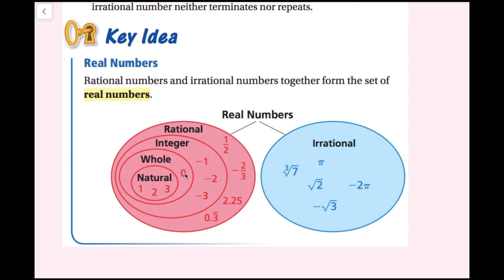Whole numbers include zero and all of the natural numbers: zero, one, two, three, four, and so on. The integers include all of the whole numbers and their opposites, so now we can have negative numbers without a fractional or decimal component when simplified — negative one, negative two, 25, negative 500. Rational numbers can be written as a ratio of two integers: one-half, negative two-thirds, 2.25, 0.3 repeating. Repeating decimals, terminating decimals, and fractions are all examples of rational numbers.